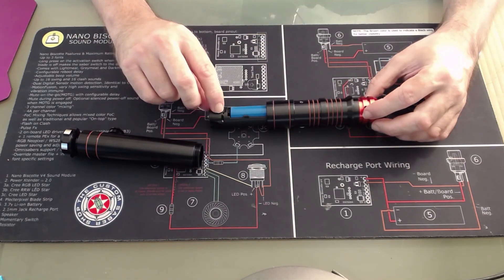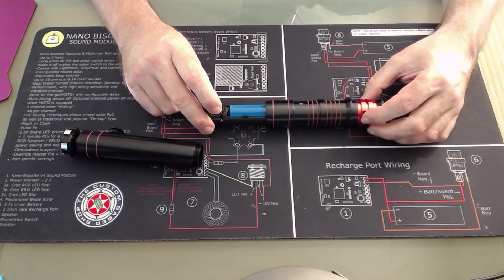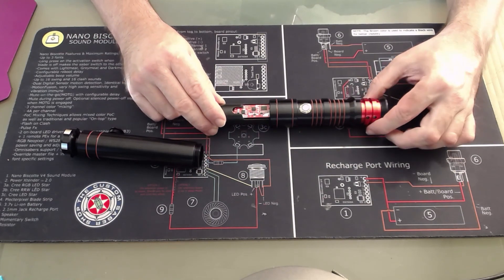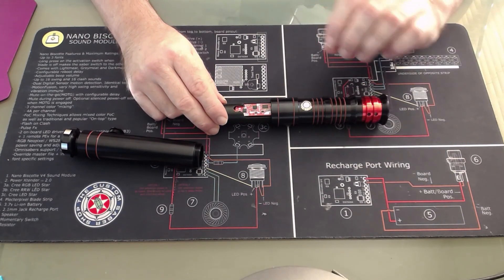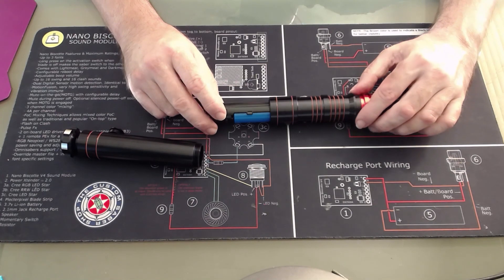Now you should get a small blue indicator light to show that your saber is charging, and if you have a saber with an illuminated switch, that will start pulsing during the charge cycle.